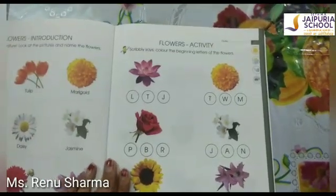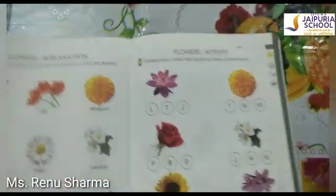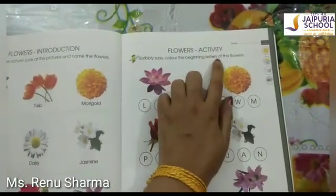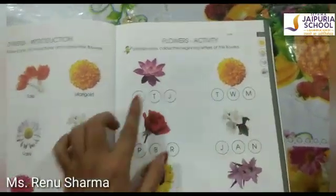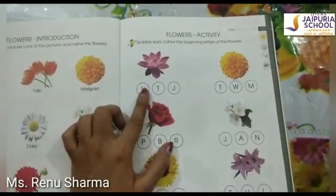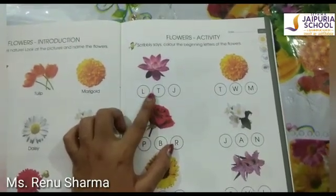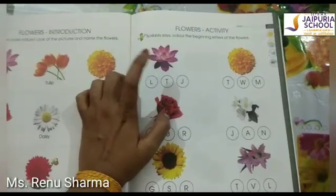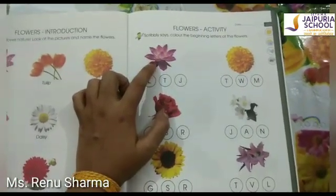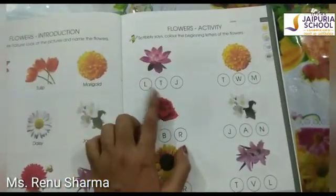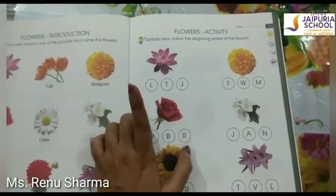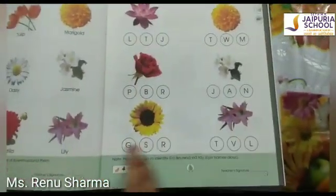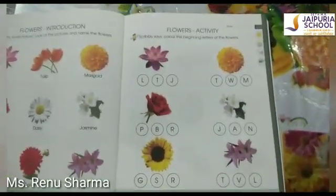Now, what does Scribbly say? Scribbly says: color the beginning letters of the flowers. You have to color the beginning letters of the flowers. Firstly, you have to guess which flower it is, and then you have to color the beginning letters. You have to do all of these activities.